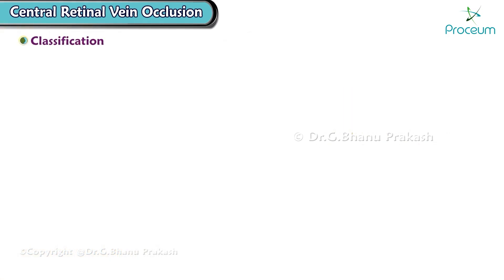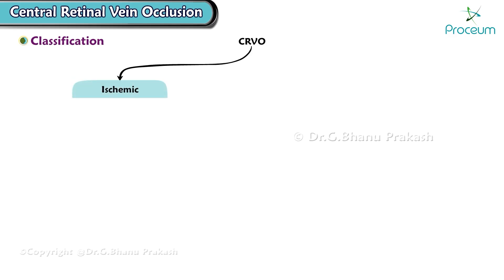Let's start with the classification. Central retinal vein occlusion can be classified into two main types: ischemic central retinal vein occlusion and non-ischemic central retinal vein occlusion.